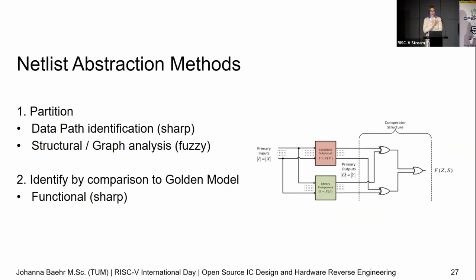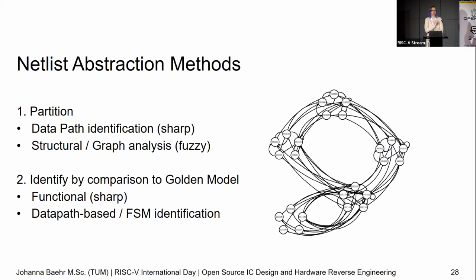We can do identification functionally — that's formal verification based. We take our unknown thing and known thing and ask: do they do functionally the same thing? That's great until you have errors — a missing gate, a missing inverter — and suddenly formal verification says they're not the same thing. That happens quite often, so we only do this when we have perfect partitions. We can also look at the data path and compare data flow, do FSM identification, and control logic analysis — lots of graph-based work to figure out functionality.